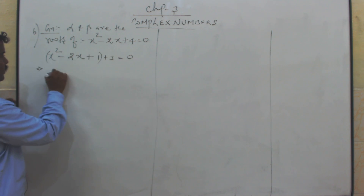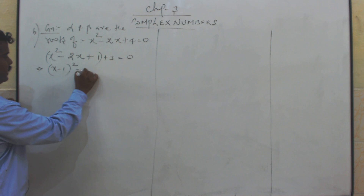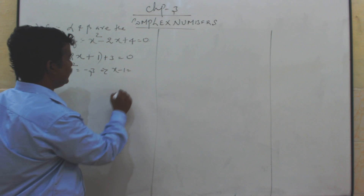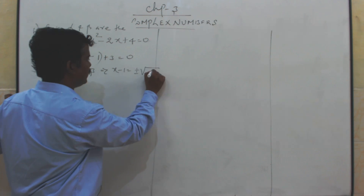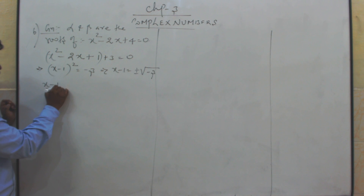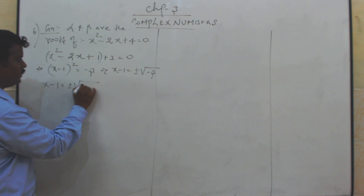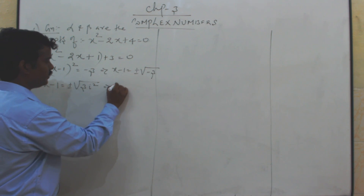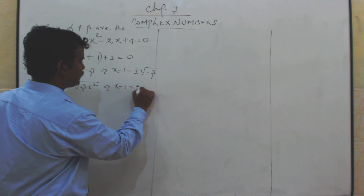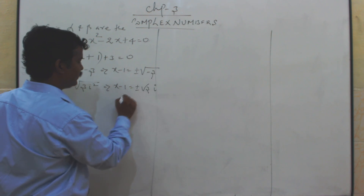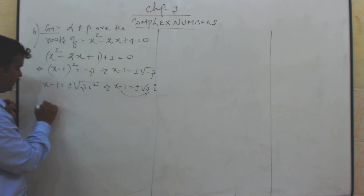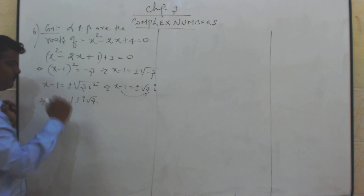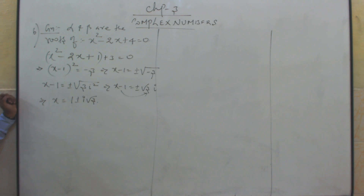Completing the square: x minus 1 the whole square is equal to minus 3. Taking square root on both sides, x minus 1 is equal to the square root of minus 3. So x minus 1 is equal to plus or minus root 3 times i, since minus 1 can be written as i squared. Therefore x is equal to 1 plus or minus i root 3. So the roots of the equation are 1 plus or minus i root 3.